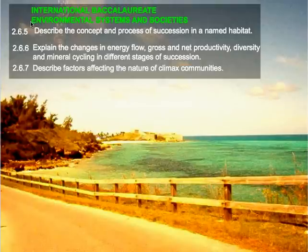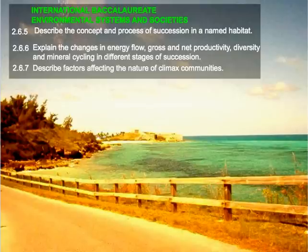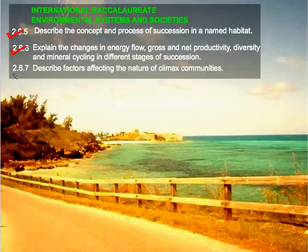Welcome. Today we continue our journey through the IB Environmental Systems and Societies syllabus, stopping at topics 2.6.5 — to describe the concept and process of succession in a named habitat; 2.6.6 — to explain the changes in energy flow, gross and net productivity, diversity, and mineral cycling in the different stages of succession; and 2.6.7 — to describe factors affecting the nature of climax communities.